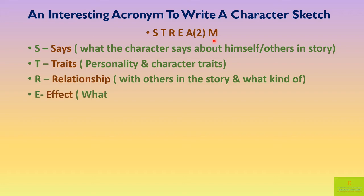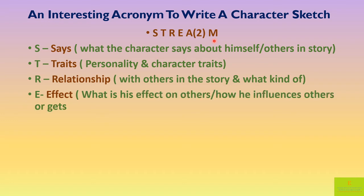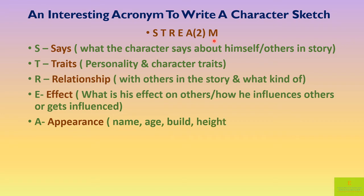Next, E stands for 'effect' — what is his effect on others, or how he influences others in the story, or how others influence your character. So it's both ways. Now, A stands for 'appearance', which will include everything outer: name, age, build, height, style, clothes, looks, etc. So the outer physical appearance. Even if the character has a particular way of speaking, you can include that in appearance too.